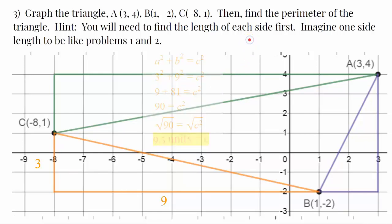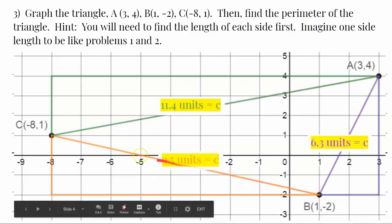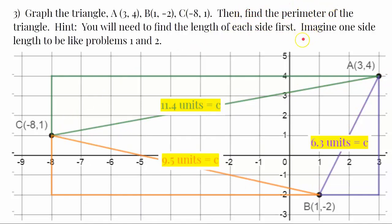So, now that I have solved, using the Pythagorean theorem, for all three sides of my triangle, I now have the measurements of my original triangle. And going back to the problem, it says, find the perimeter of the triangle.